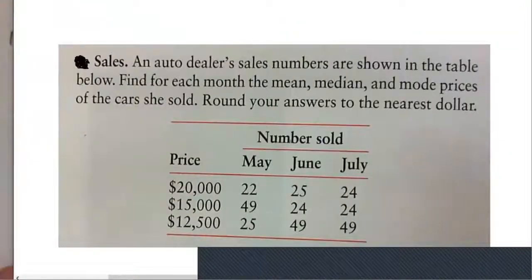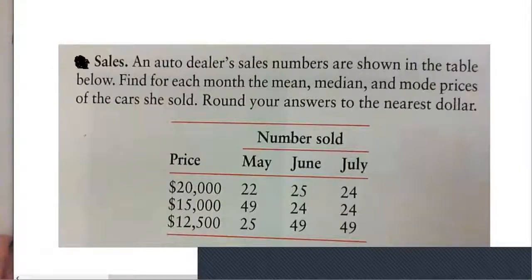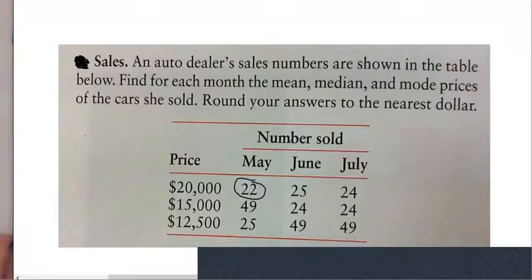For May we need to find the mean, the median, and the mode. Let's start with the mean. In May she sold 22 cars priced at $20,000, then 49 cars priced at $15,000, and then 25 cars priced at $12,500.